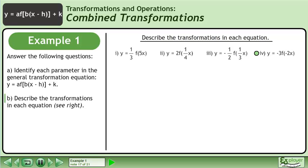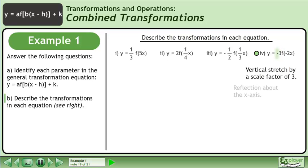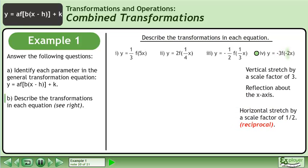Next we have the transformation y equals negative 3 times f of negative 2x. a equals negative 3, so there is a vertical stretch by a scale factor of 3. The negative indicates that there is a reflection about the x-axis. b equals negative 2, so there is a horizontal stretch by a scale factor of 1 over 2. The negative indicates that there is a reflection about the y-axis.